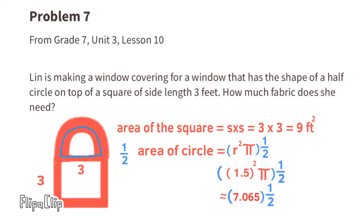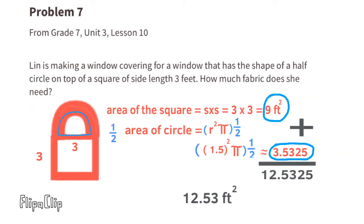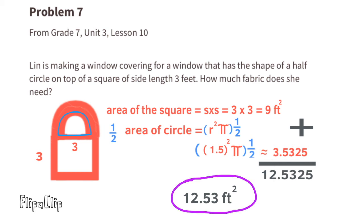Since this is a half circle, we cut 7.065 in half: 7.065 divided by 2 equals 3.5325 square feet. Adding the square and half-circle areas: 9 plus 3.5325 equals 12.5325 square feet, approximately 12.53 square feet. To make a window covering for the entire window, Lynn would need approximately 12.53 square feet of fabric.